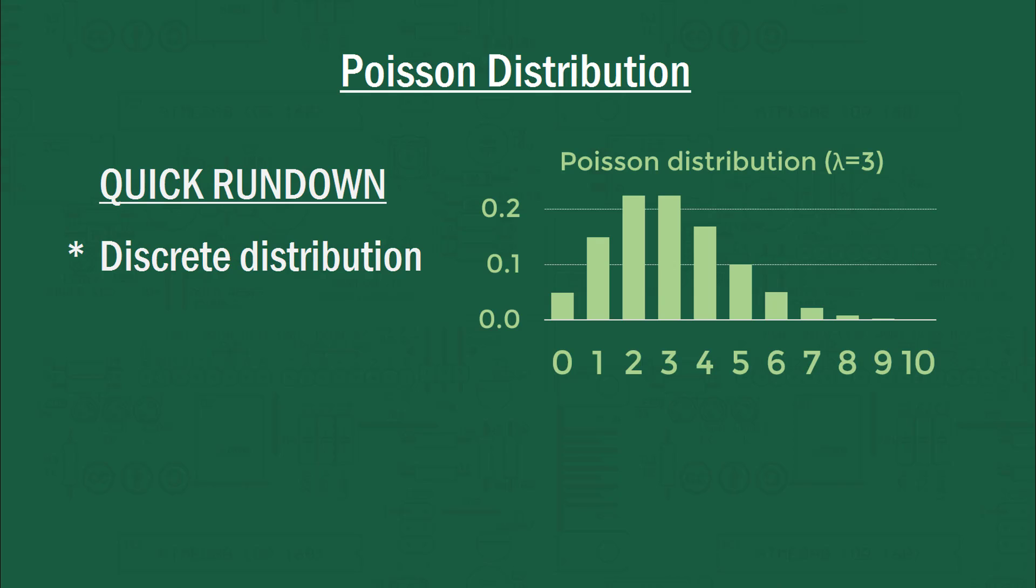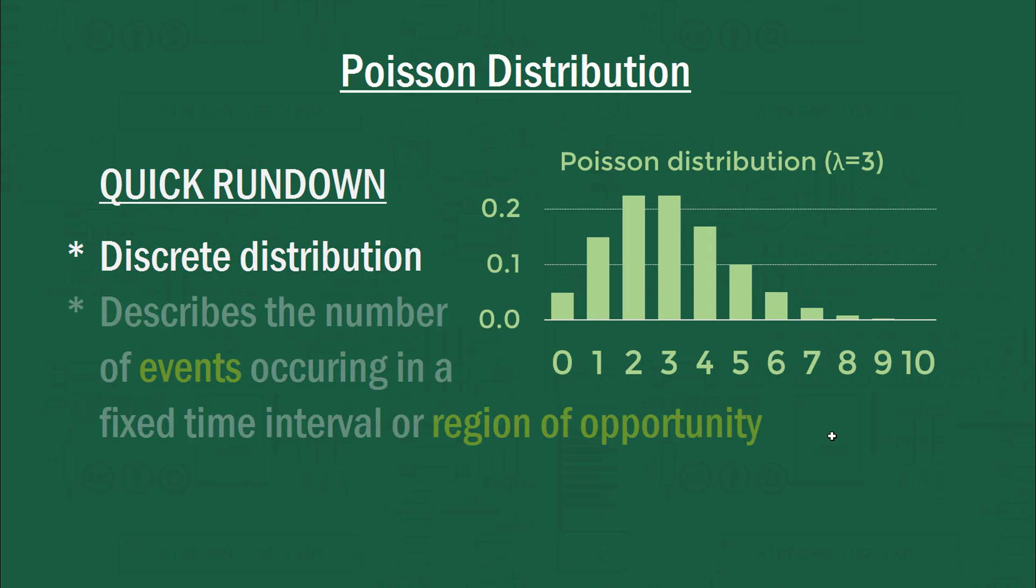Firstly, we know it's a discrete distribution, meaning there's only a discrete set of values that this distribution can take. But what does this distribution actually describe? Well, it describes the number of events occurring in a fixed time interval or region of opportunity.